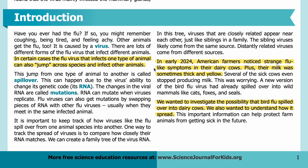This jump from one type of animal to another is called spillover. This can happen due to the virus's ability to change its genetic code — its RNA. The changes in the viral RNA are called mutations. RNA can mutate when viruses replicate. Flu viruses can also get mutations by swapping pieces of RNA with other flu viruses, usually when they meet in the same infected animal.